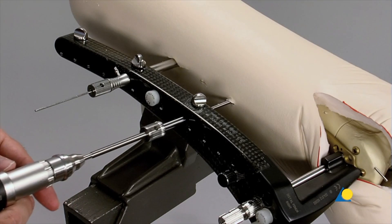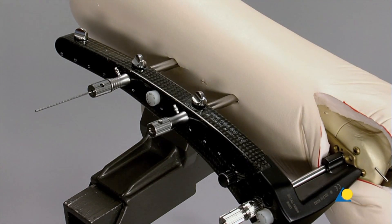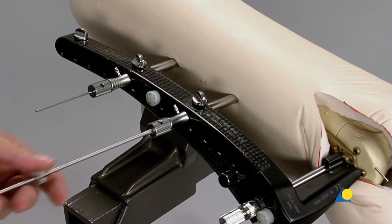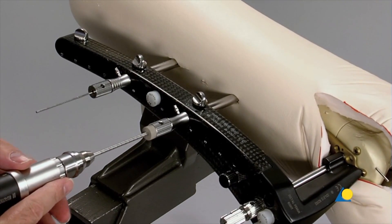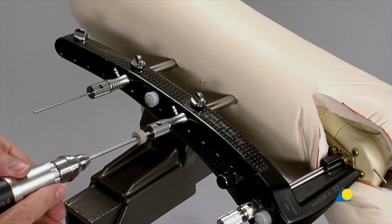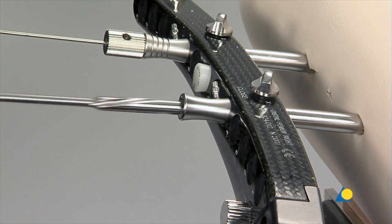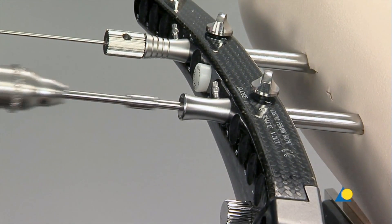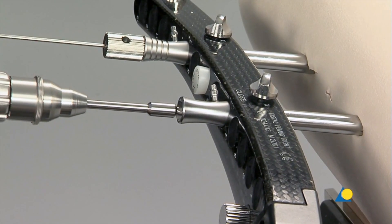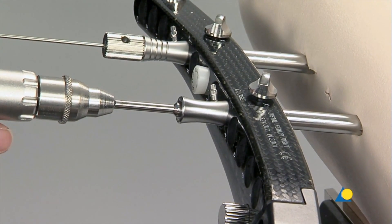The pull reduction instrument is removed and replaced with a locking screw. As the reduction device was only inserted monocortically, the far cortex must be drilled before the screw is introduced. In this case, self-tapping screws are used. 26 mm long self-drilling screws are an alternative for monocortical treatment where there is good quality bone.